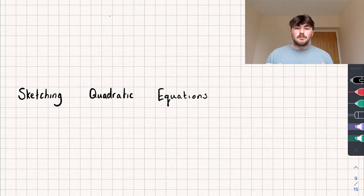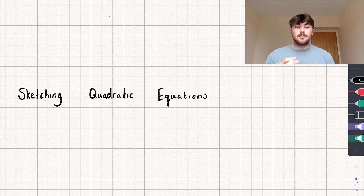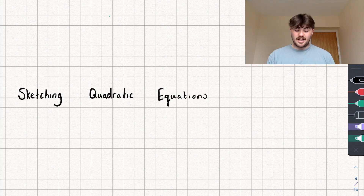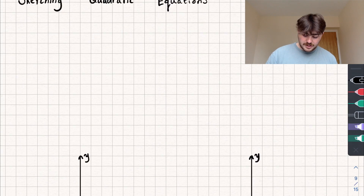In A-level we're going to do this slightly differently. We're just going to find some key pieces of information about the quadratic graph and use these to help us draw a sketch. We're going to look at what those pieces of information are in a second, but first we're going to look at some key properties of quadratic graphs.